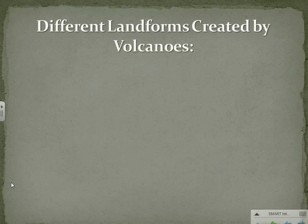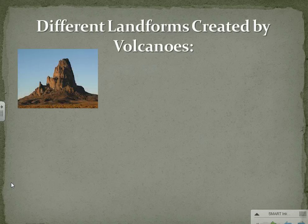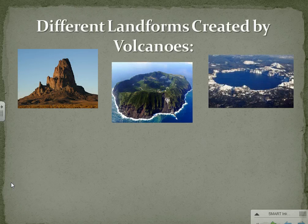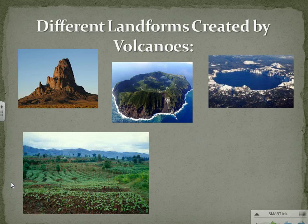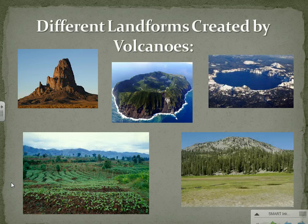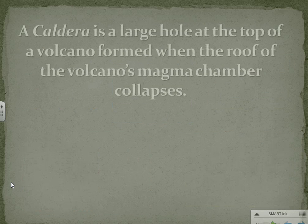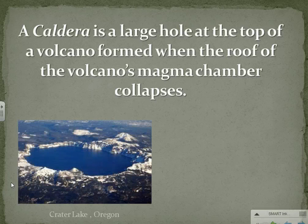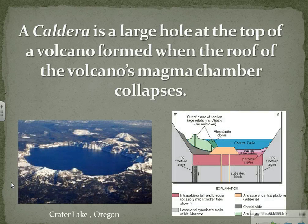Different landforms created by volcanoes. A caldera is a large hole at the top of a volcano formed when the roof of a volcano's magma chamber collapses.